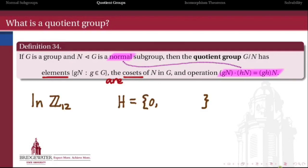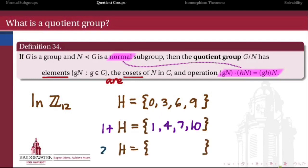As a quick example, let's look at Z mod 12 again with the subgroup H = {0, 3, 6, 9}. The cosets are 1+H and 2+H as you can see here respectively. And we showed already that this was in fact a normal subgroup. Actually, since Z mod 12 is abelian and H is a subgroup, we know for sure that H is a normal subgroup.